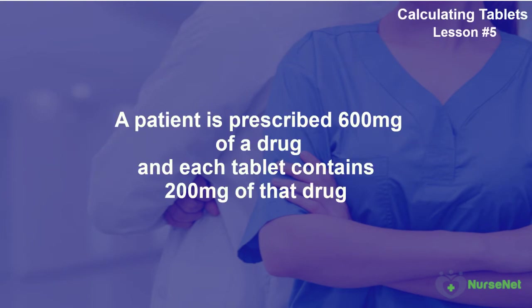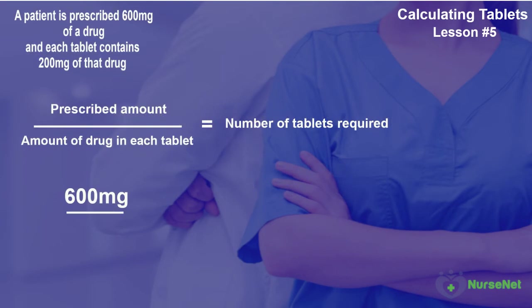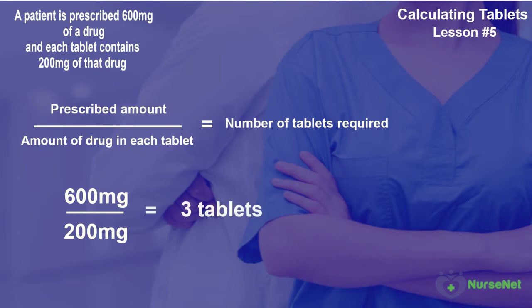For example, if the patient is prescribed 600mg of a drug, and each tablet contains 200mg of that drug, we simply divide 600mg by 200mg, which gives us three. Therefore, the patient requires three tablets.